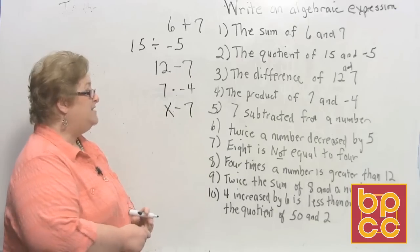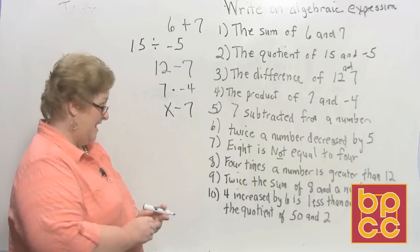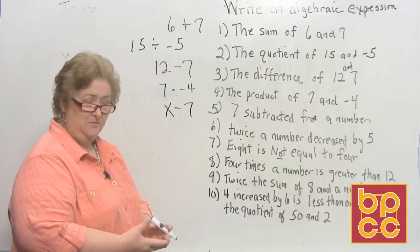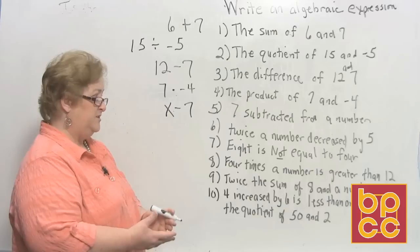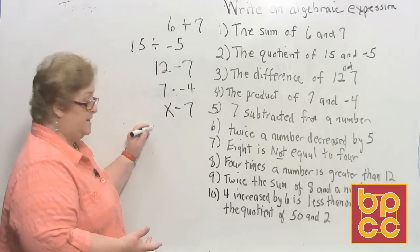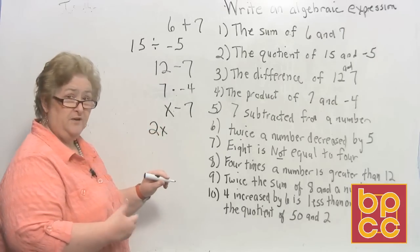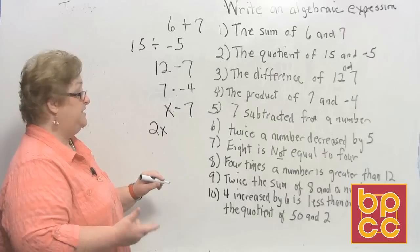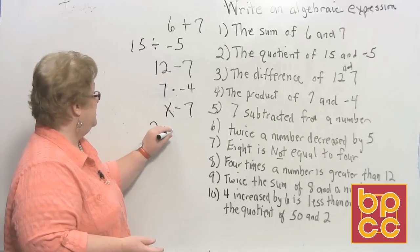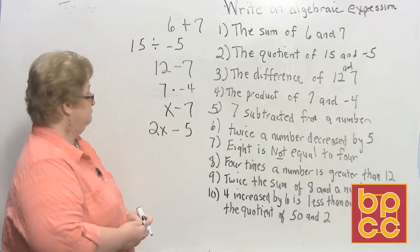Let's look at number 6: twice a number decreased by 5. We'll let the number be x. Twice a number means 2x, and decrease means subtract. So twice a number decreased by 5 is 2x minus 5. That looks good.